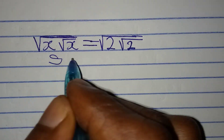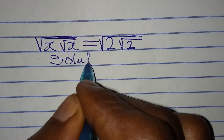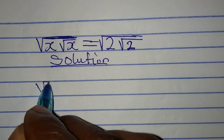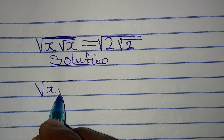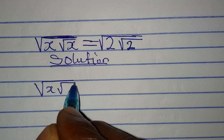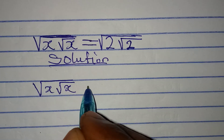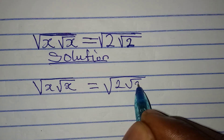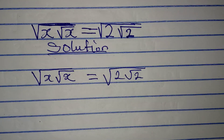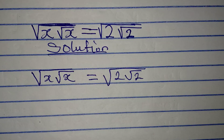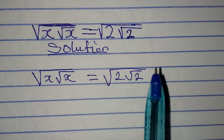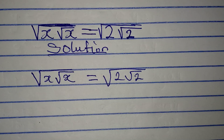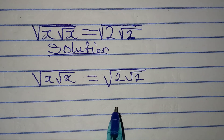Hello everyone, welcome to Foucault Mathematics. Let's solve this problem very quickly. We have x times the square root of x, and this is equal to the square root of 2 times the square root of 2. By looking at this, you'll see that one of the solutions to this problem is that x is equal to 2, but that is not going to be complete — we can still have other solutions.